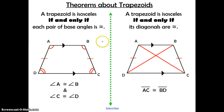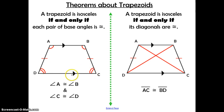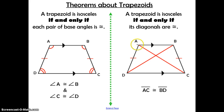Here are two theorems about trapezoids. First: a trapezoid is isosceles if and only if each pair of base angles is congruent. So if angle A and B along this base are congruent, and angle C and D along this base are congruent, then the trapezoid is isosceles. Second: a trapezoid is isosceles if and only if its diagonals are congruent. If diagonals AC and BD are congruent to each other, then you have an isosceles trapezoid.